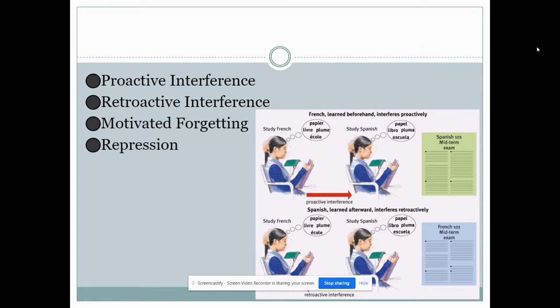There are two types of interference, proactive and retroactive interference. With proactive interference you forget the newer information that you've studied or that you've tried to remember because you're mixing it up with older information. Say for example you were trying to remember a new address but all you could think about was your old address after you've moved. That would be proactive interference.